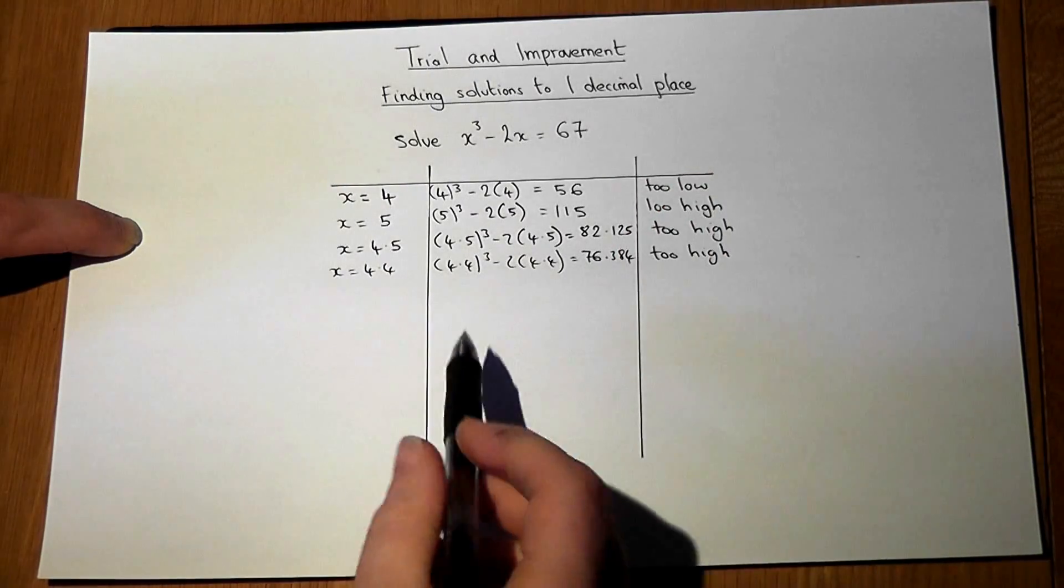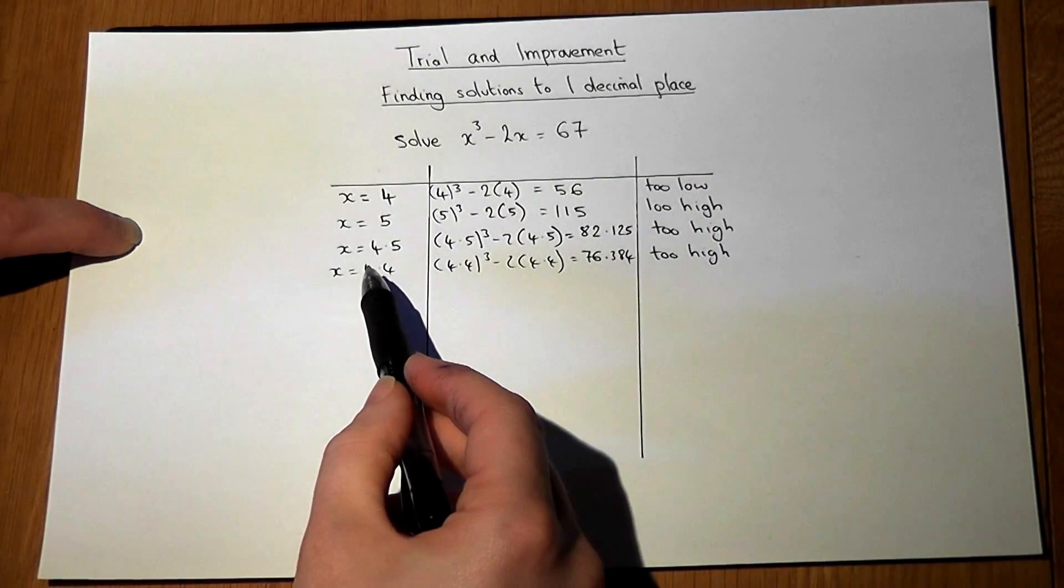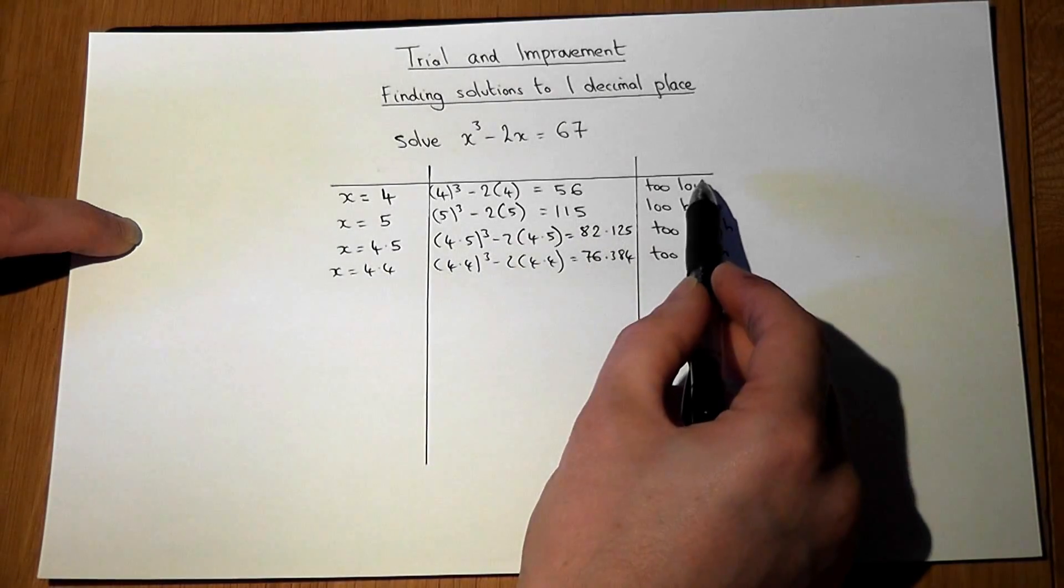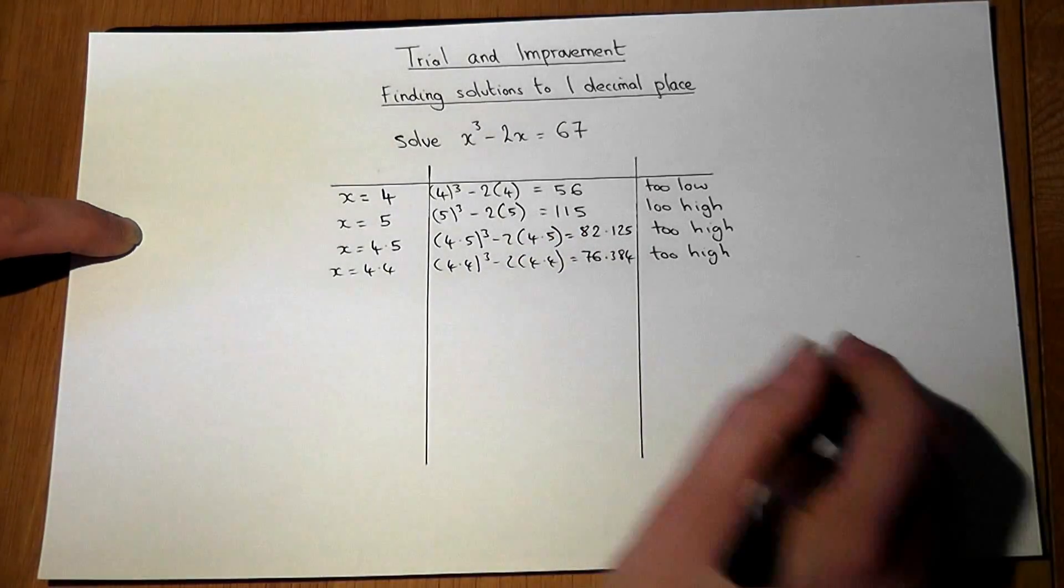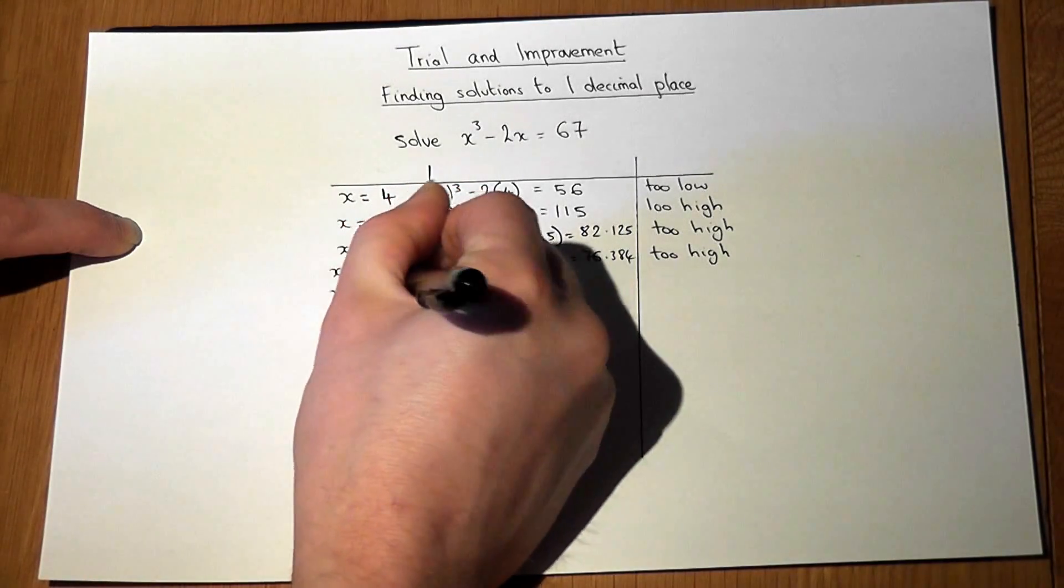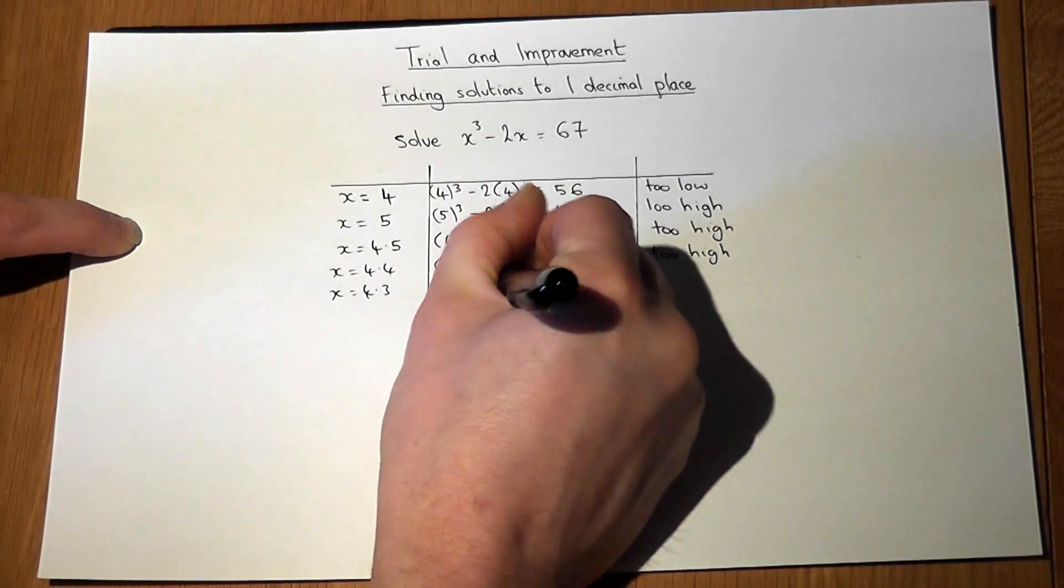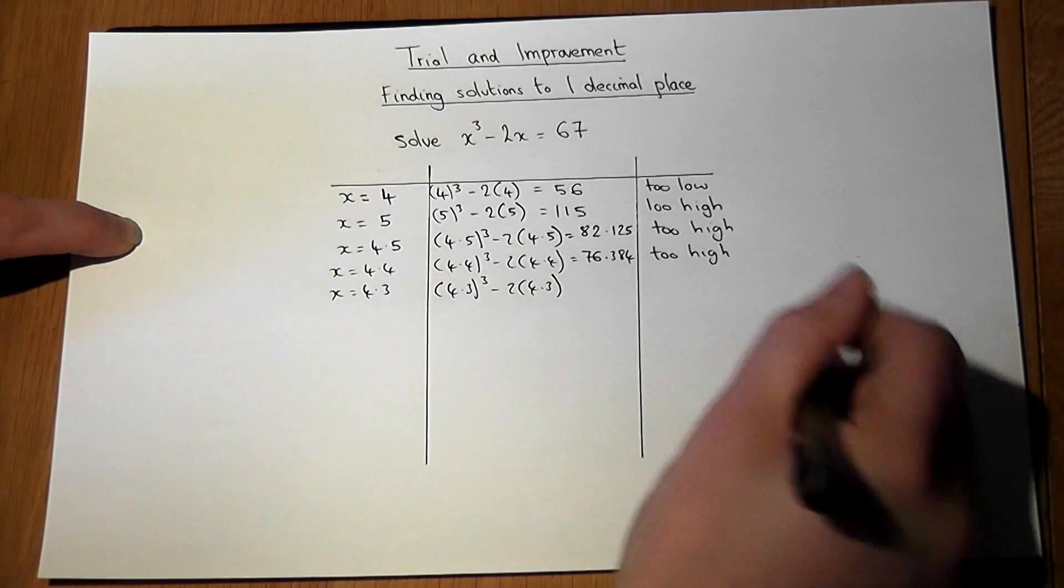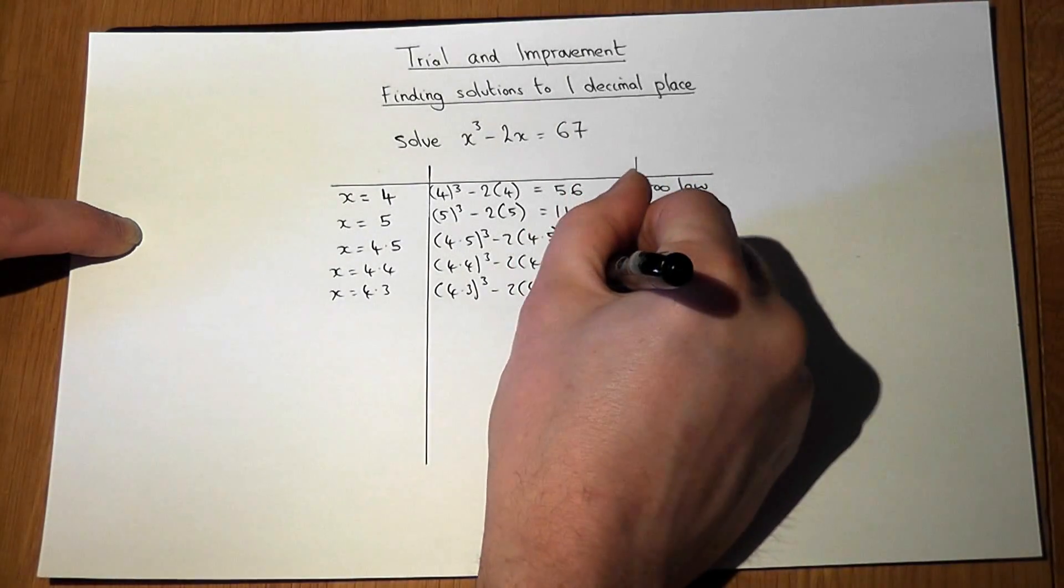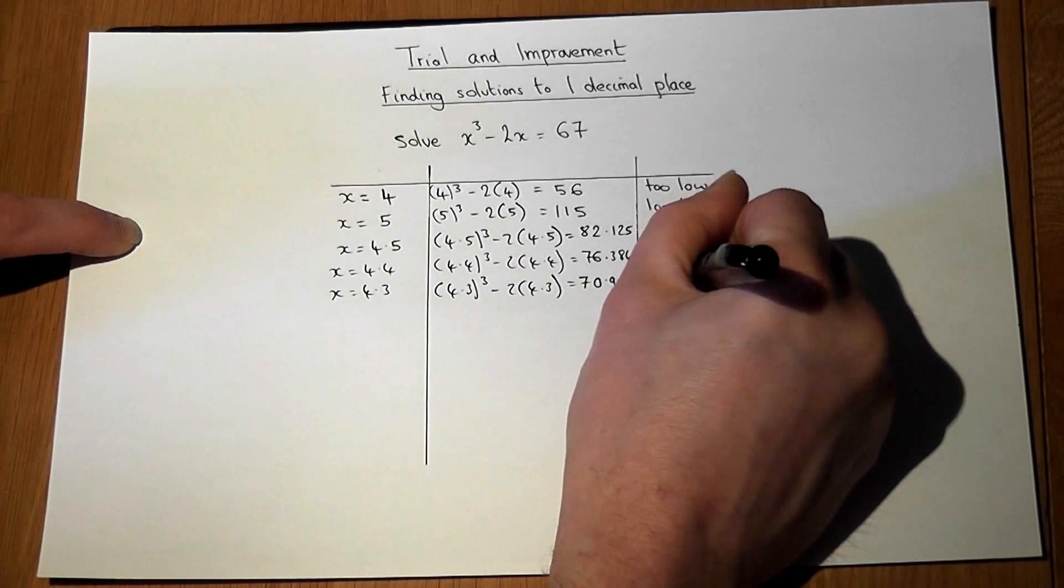Now to get the full marks in the exam requires a logical progression through the values, summarizing your comparison compared to the key value you want to write. So 4.3 gives us 70, still too high.